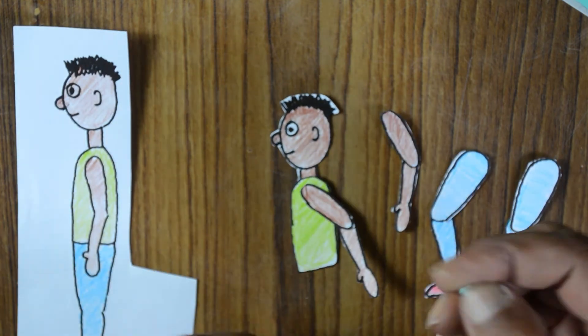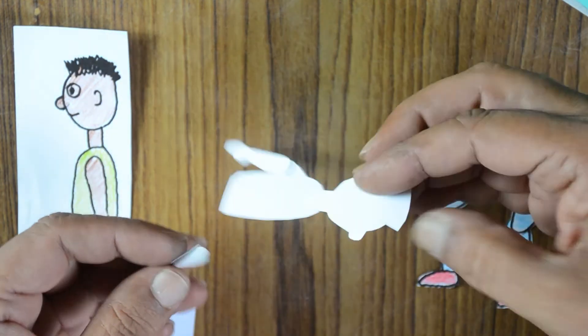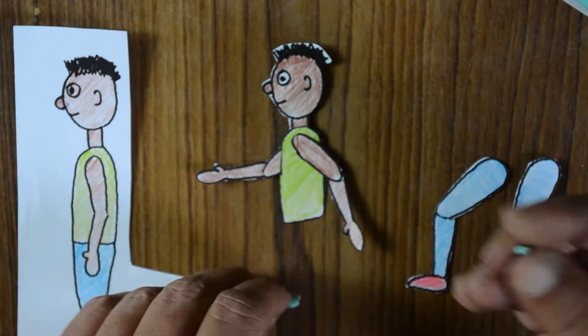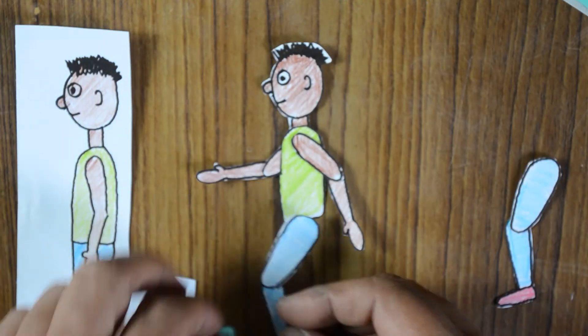Attach the arm with forearm to the body just under the neck. One arm in front and the other behind.